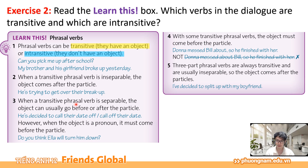Number three: when a transitive phrasal verb is separable, the object can usually go before or after the particle. Ví dụ: 'He's decided to call their date off' — call off their date. Cụm động từ 'call off' (tạm hoãn sự kiện) có thể tách rời, nên tân ngữ 'their date' có thể đặt ở giữa như 'call their date off', hay ở đằng sau như 'call off their date'. Nói cách khác, tân ngữ có thể đứng trước hoặc sau tiểu từ 'off'.